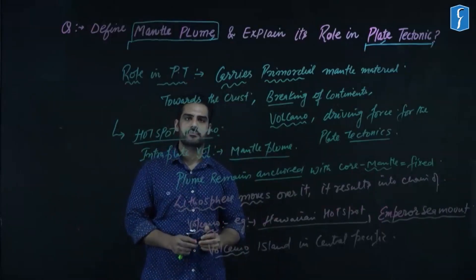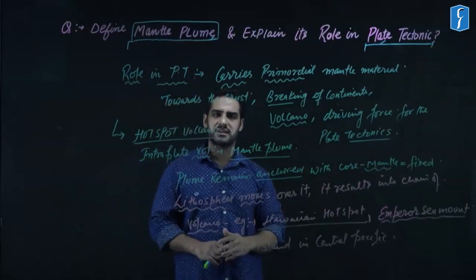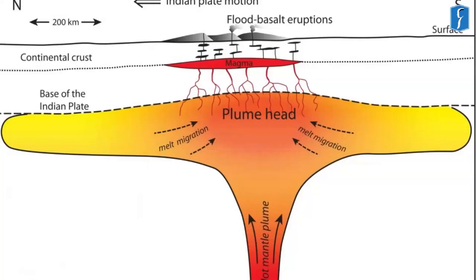A further example is the formation of the Indian plate. While the Indian plate was moving over the Indian Ocean, there was already hotspot activity in the southern part of the Indian Ocean, known as the Reunion hotspot. As the Indian plate moved over this hotspot, the mantle plumes accumulated at the base of the lithosphere. When the temperature exceeded the melting point, part of the Indian plate began to melt, resulting in continuous volcanic activity.